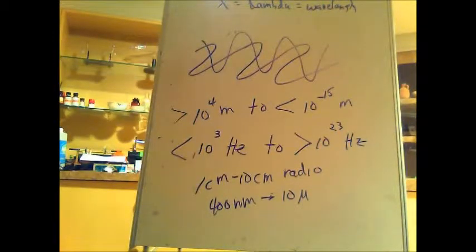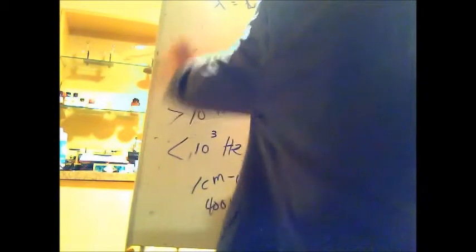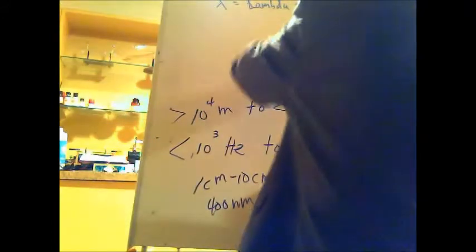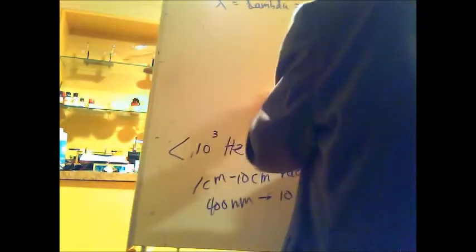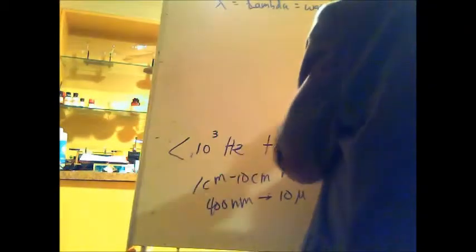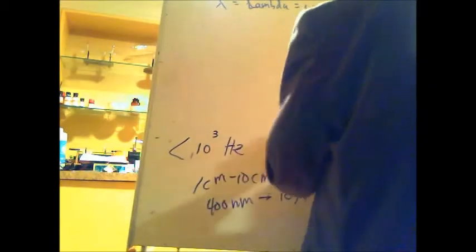Another property that waves have is they can be refracted or bent, and they also do something known as diffraction. I'll show what diffraction is — illustrate it on the board and then show an actual example using a diffraction grating, which is a way we can produce spectral patterns and analyze light coming from, for instance, stars. If we look at a wave, remember it has a crest and a trough. Another way of envisioning this is to imagine a wave front coming at you.